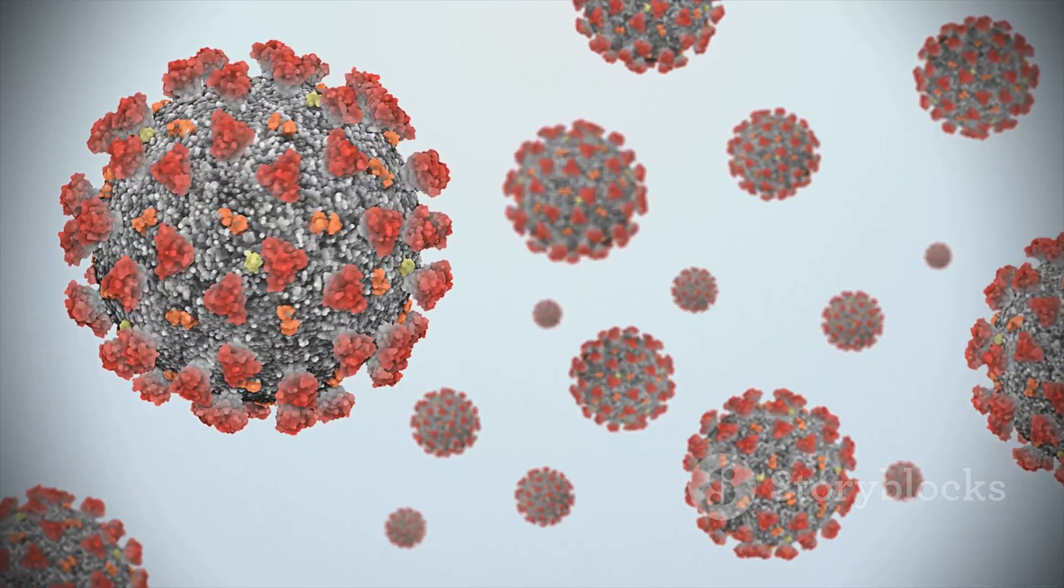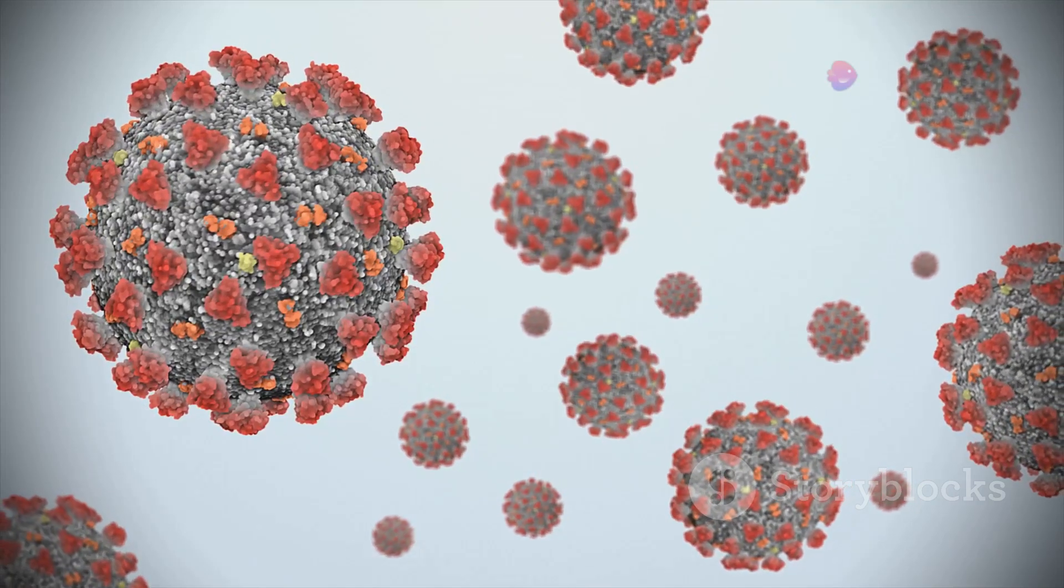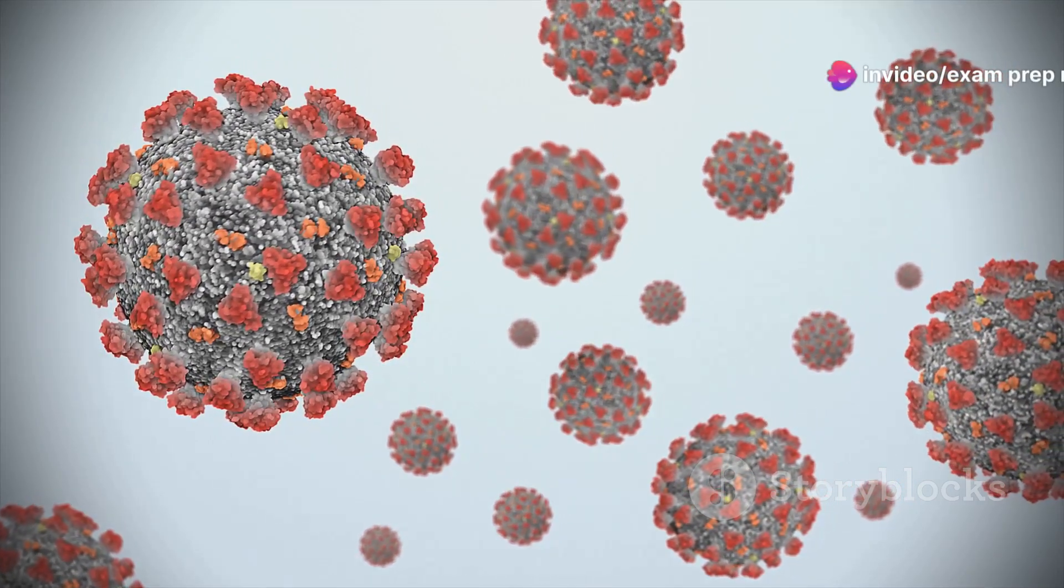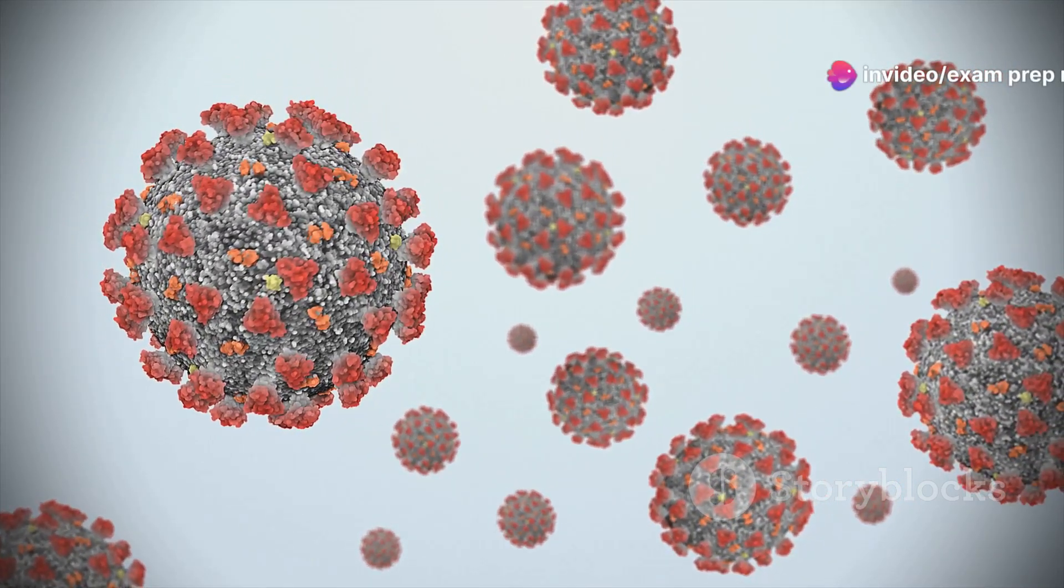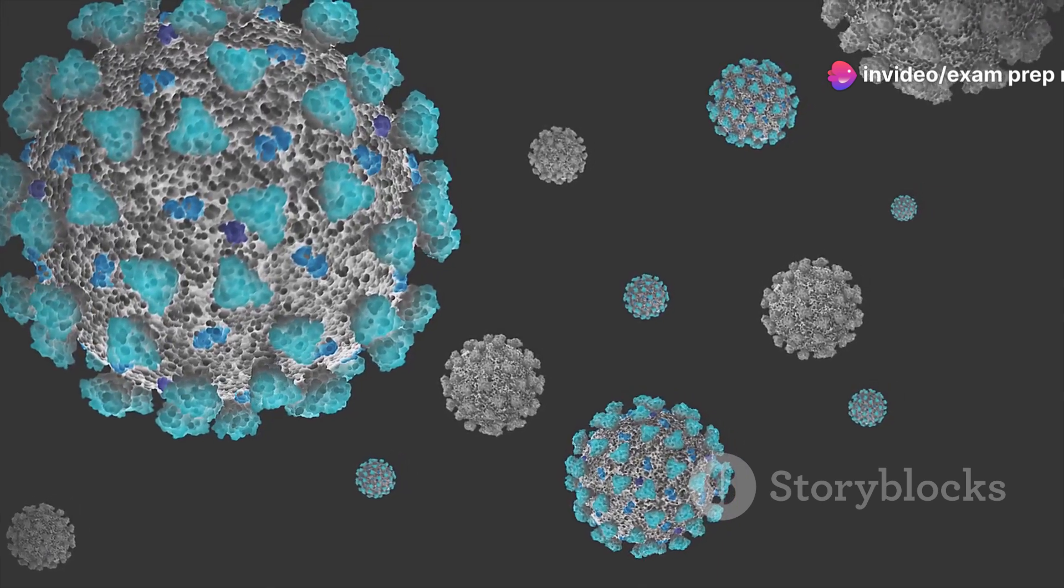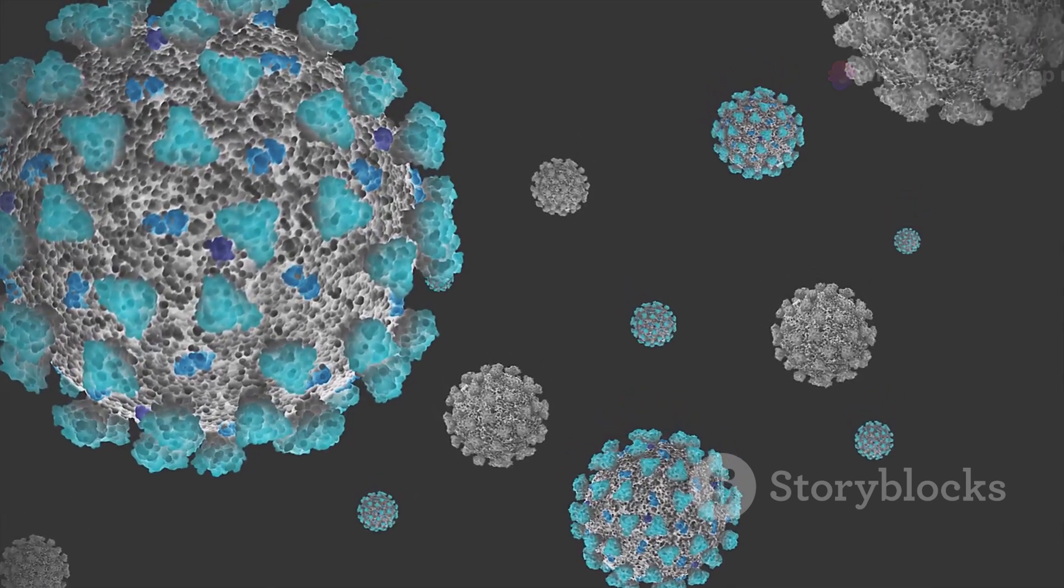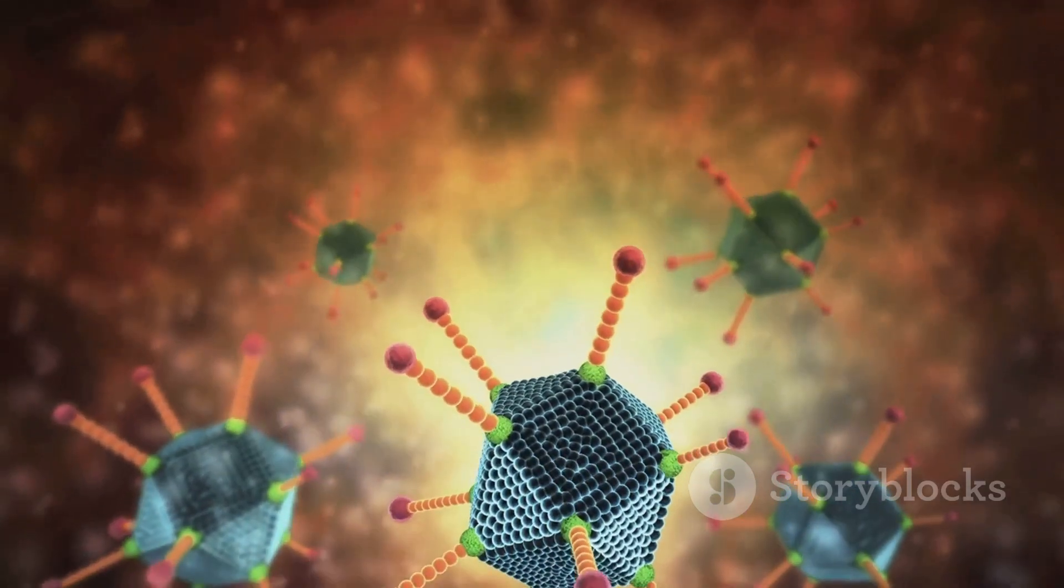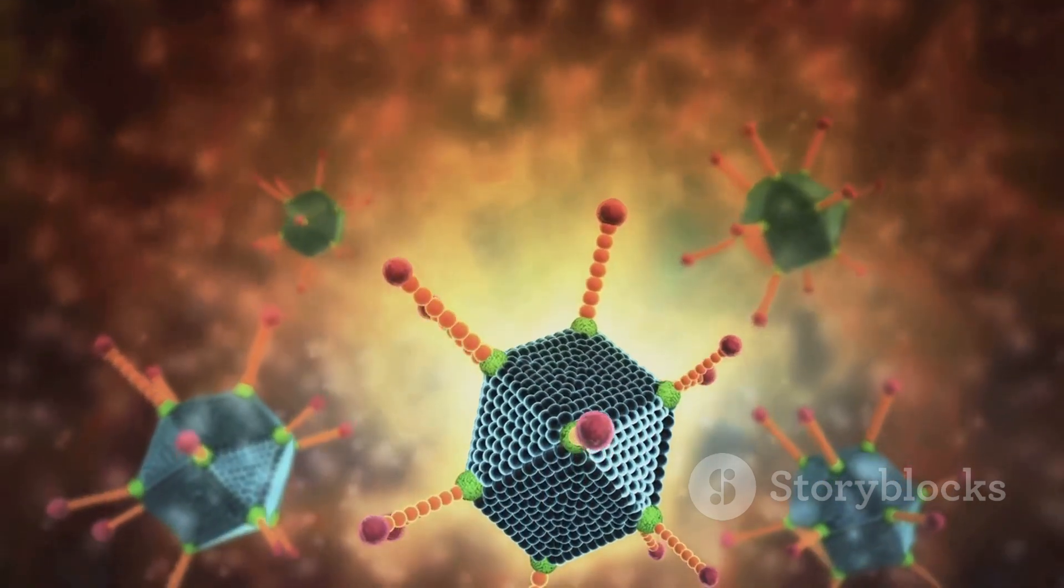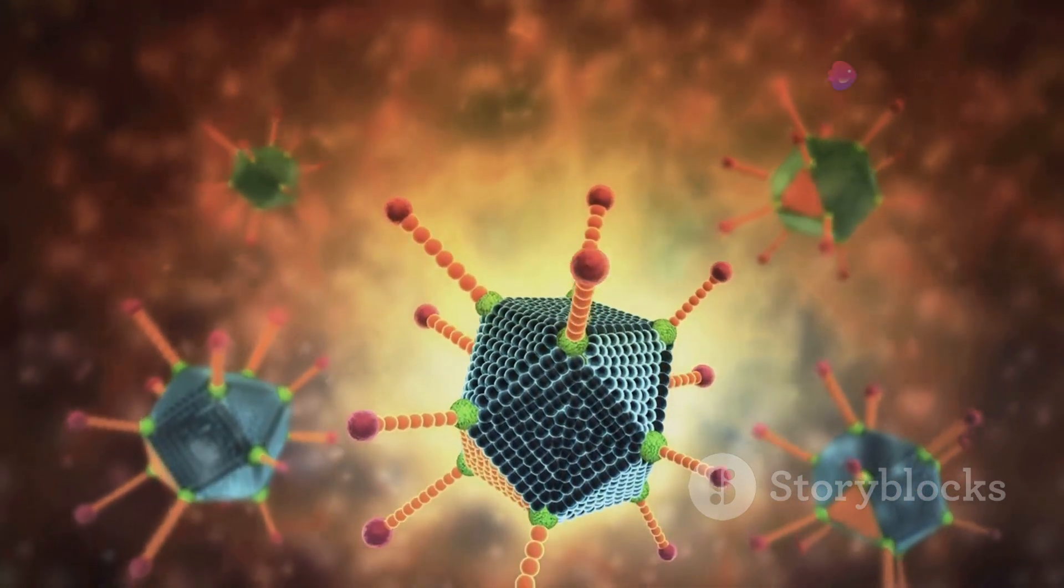Enveloped viruses, such as influenza and HIV, use this membrane cloak to disguise themselves and gain entry into host cells. Non-enveloped viruses, like the common cold virus and poliovirus, lack this envelope. They rely on specific proteins on their capsid surface to bind to and infect host cells.